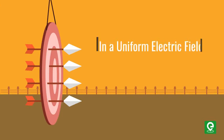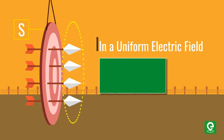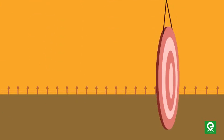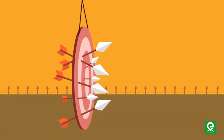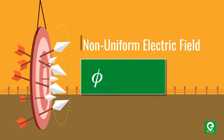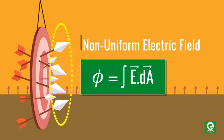In a uniform electric field, the flux passing through an area S which is normal to the electric field lines is given by E dot A. In case of non-uniform electric field, flux is given by integral of E dot dA.